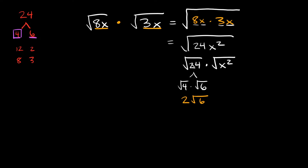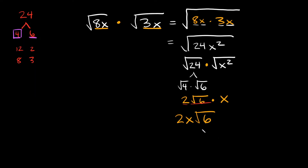So we simplified the square root of 24. Now let's simplify the square root of x squared. The square root of x squared is just x, so we're multiplying by x. Since x is not underneath a radical symbol — it's free, just like this 2 is free — I'm going to put those next to each other and write it as 2x. And then we're still multiplying by the square root of 6. So your answer is 2x root 6.